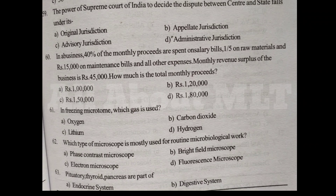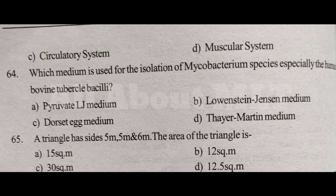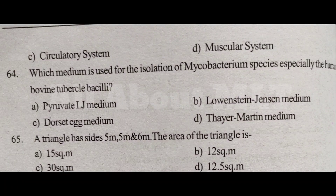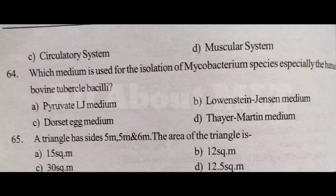Pituitary, thyroid, pancreas are part of Option A Endocrine system, Option B Digestive system, Option C Circulatory system, Option D Muscular system. Answer is Option A Endocrine system.